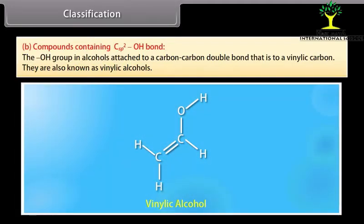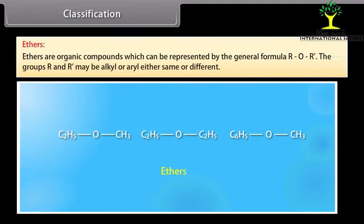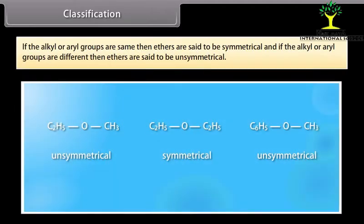Compounds containing sp2 hybridized carbon atom bonded with the hydroxyl group — the hydroxyl group in alcohols attached to a carbon-carbon double bond, that is to a vinylic carbon — are also known as vinylic alcohols. Ethers are organic compounds which can be represented by the general formula R-O-R'. The groups R and R' may be alkyl or aryl, either same or different. If both groups are the same, ethers are symmetrical; if different, they are unsymmetrical.